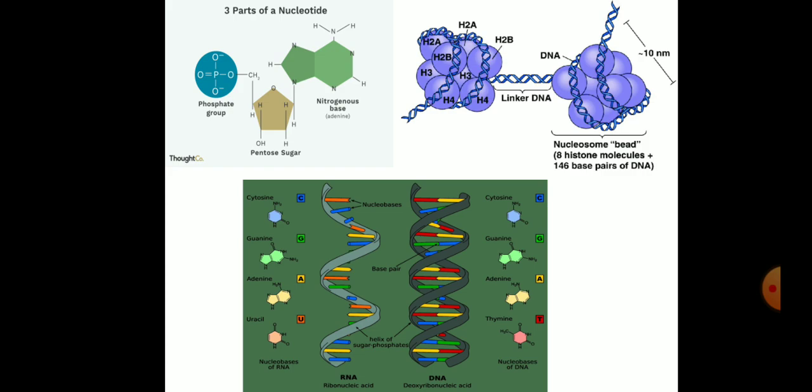This monomeric unit in the polymer is known as nucleic acid. This can be ribonucleic acid RNA or deoxyribonucleic acid DNA.